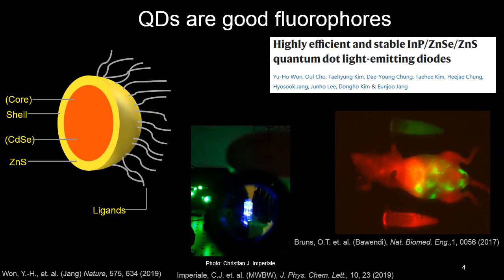Just a quick overview of the materials we're using today: it's the canonical system we use to study blinking, a core of cadmium selenide overcoated or shelled with zinc sulfide, and then passivated with these long organic ligands.